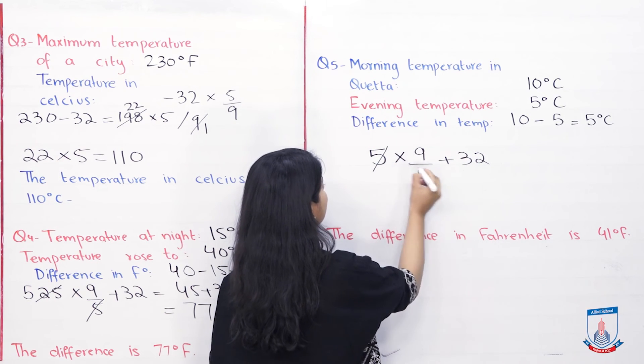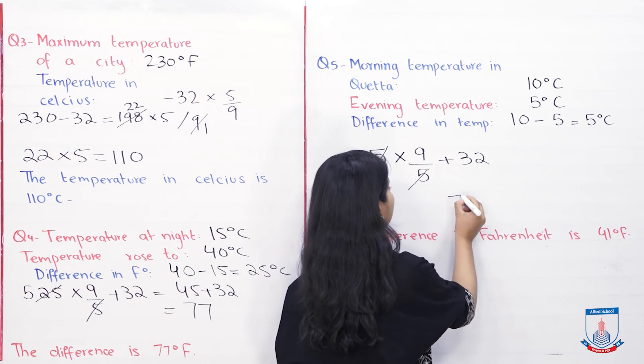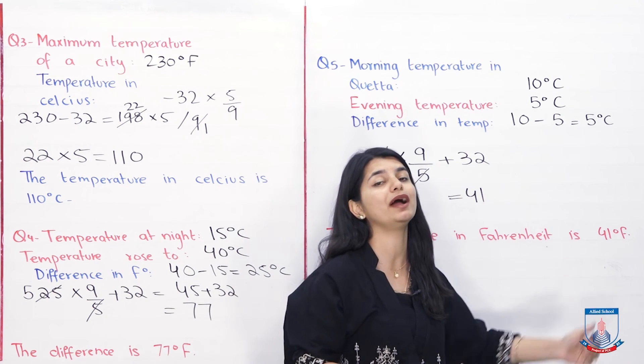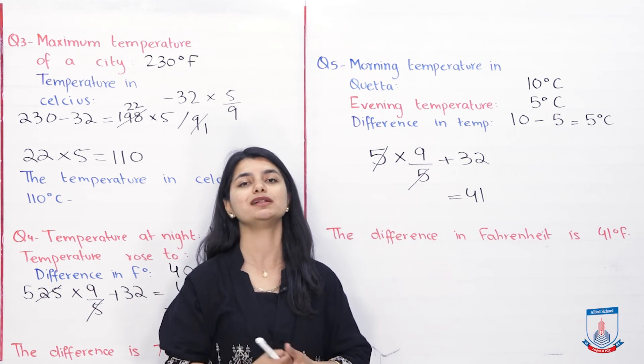5 degrees Celsius, multiply by 9 by 5 plus 32. 5 and 5 are cancelled. 9 plus 32 is 41. So your answer is the difference in Fahrenheit is 41 degree Fahrenheit. From this way, Celsius and Fahrenheit, you have the answers.